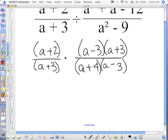Because our denominator is really this. Okay, so what are my restrictions on A? Positive 3, negative 3, and negative 4.